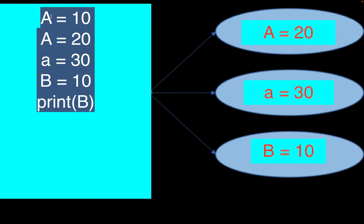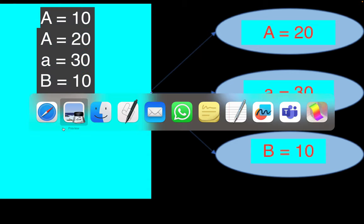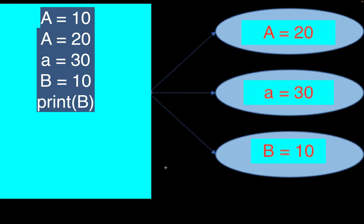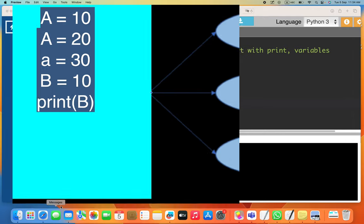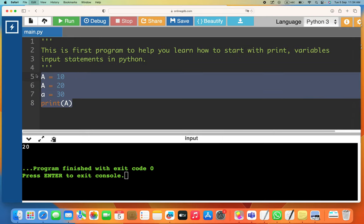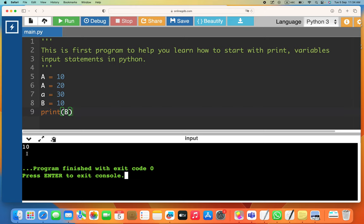Let's go back to the compiler, copy and paste the code, and run it. It gives us 10 at the bottom — you can see the print is 10.